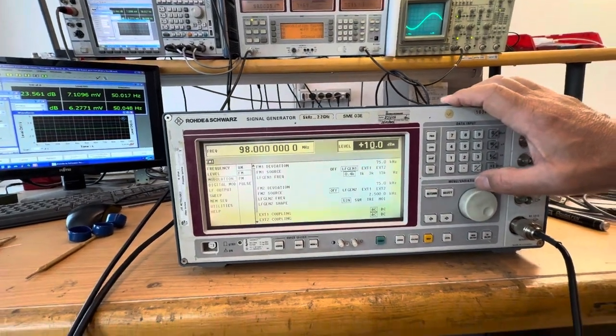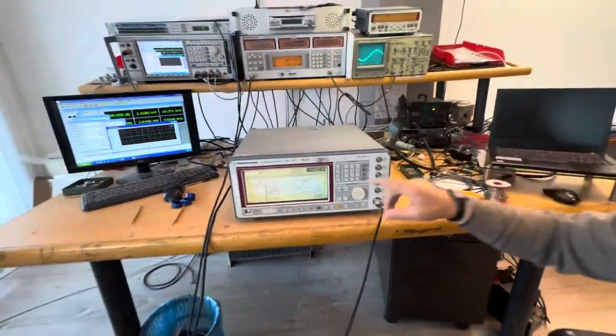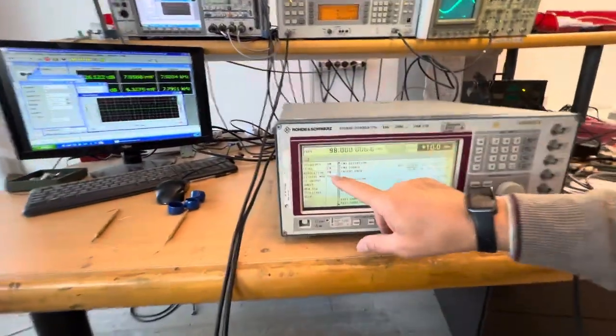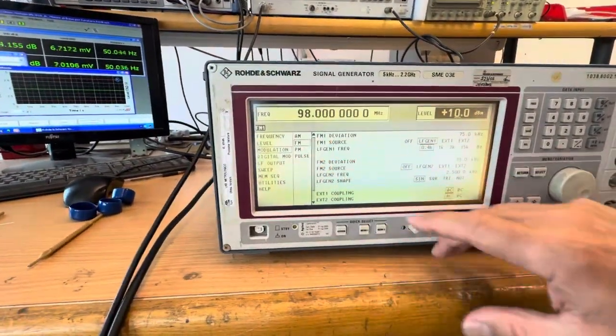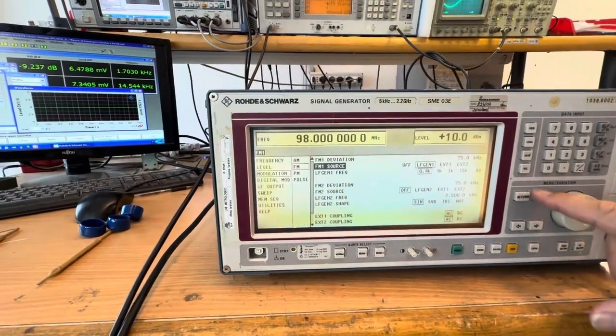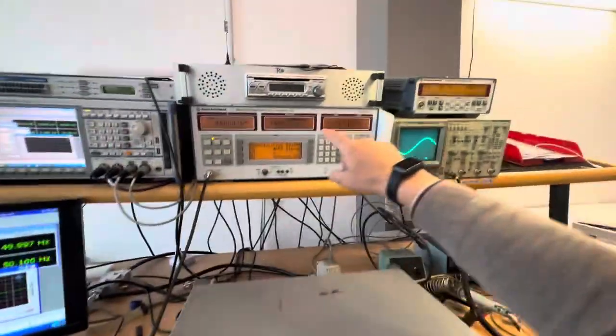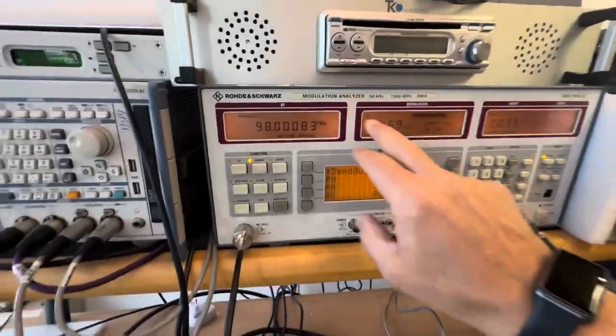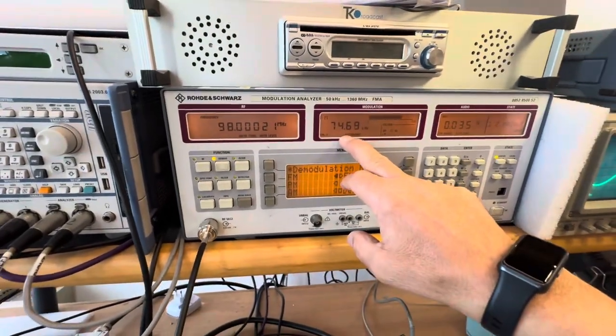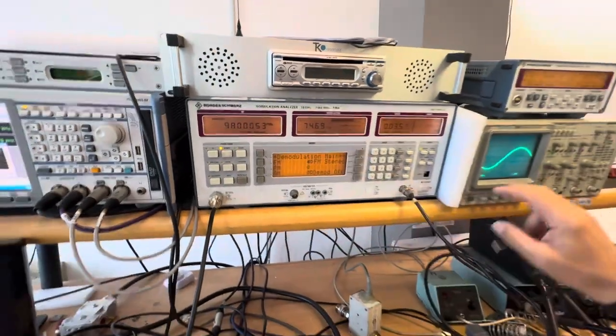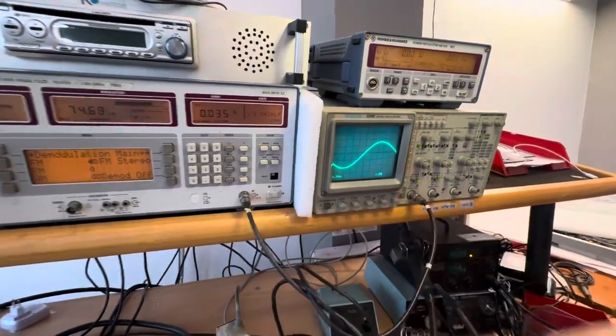And now I will change from FM modulation to AM modulation. Look at this here. We have still 99 megahertz, 74 kilohertz deviation. And here we have our standard signal.